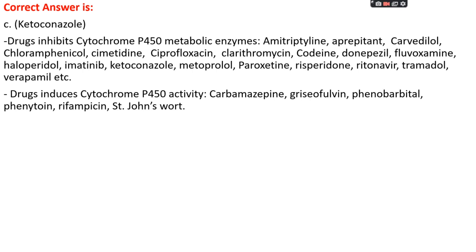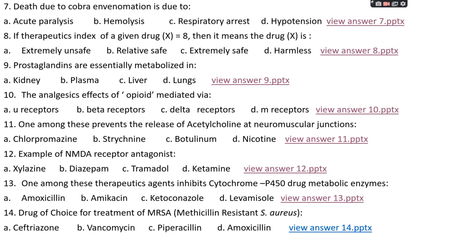Drugs that induce cytochrome P450 activity include carbamazepine, griseofulvin, phenobarbital, phenytoin, rifampicin, and St. John's Wort. When a CYP450 inducer is given with another drug, it speeds up that drug's metabolism and excretion. When a CYP450 inhibitor is given with another drug, it decreases that drug's excretion and metabolism.